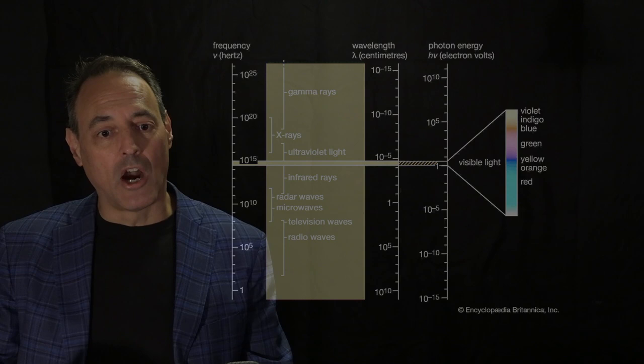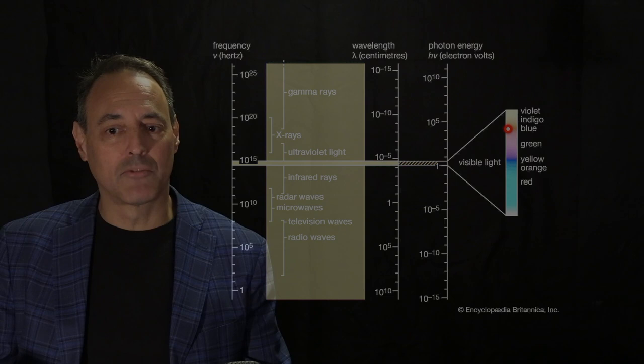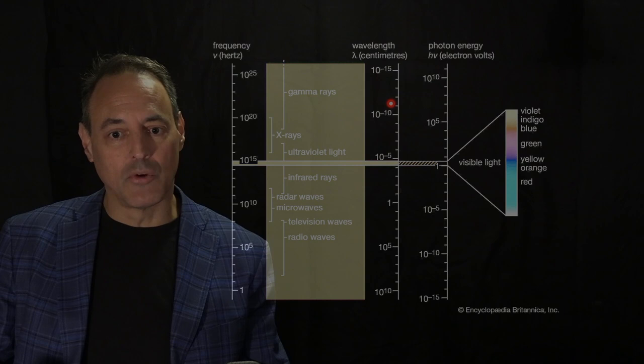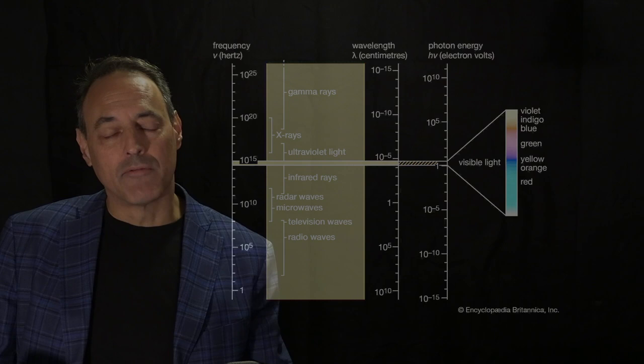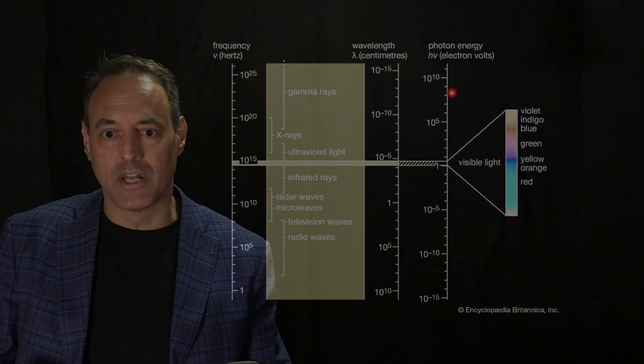Our own visible light spectrum sits right around 10 to the 15 hertz. This is the part of the electromagnetic spectrum that our sensors actually pick up in our environment. We go from infrared to ultraviolet, and each one of these has an associated wavelength — light sits in roughly the microns regime. For every photon delivered in the electromagnetic spectrum, it has some kind of associated energy. Gamma rays are highly energetic because of the famous relationship E equals hν, where h is Planck's constant and ν is the frequency.